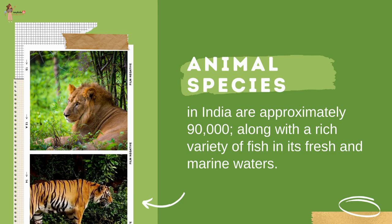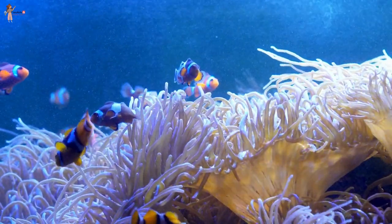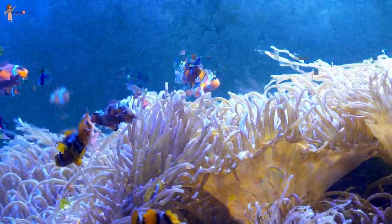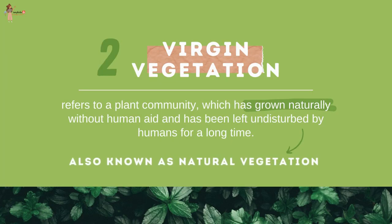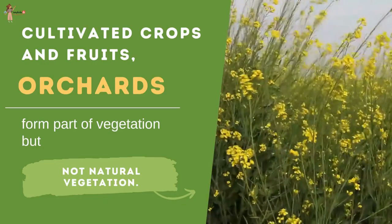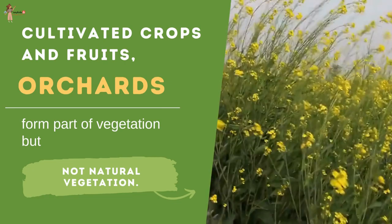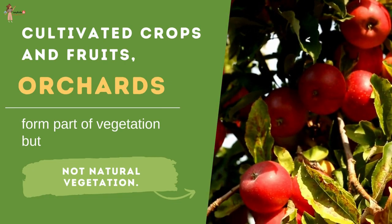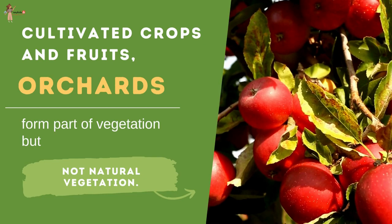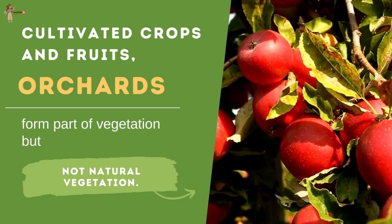The country has many non-flowering plants such as ferns, algae and fungi. India also has approximately 90,000 species of animals, as well as a rich variety of fish in its fresh and marine waters. Natural vegetation refers to a plant community which has grown naturally without human aid and has been left undisturbed for a long time — this is termed virgin vegetation. Cultivated crops and fruit orchards form part of vegetation but not natural vegetation.